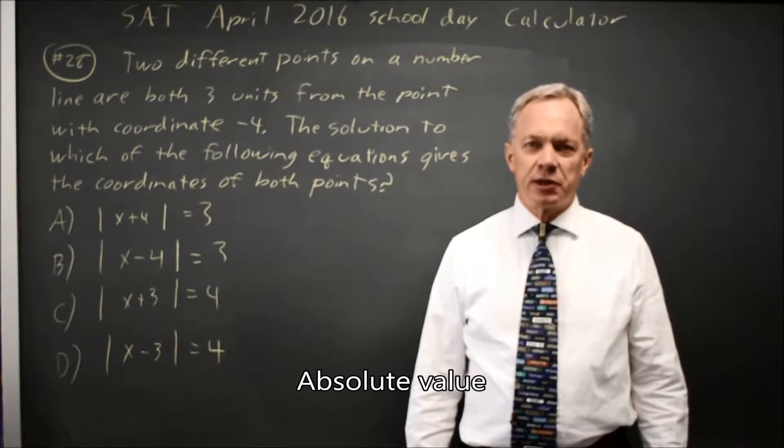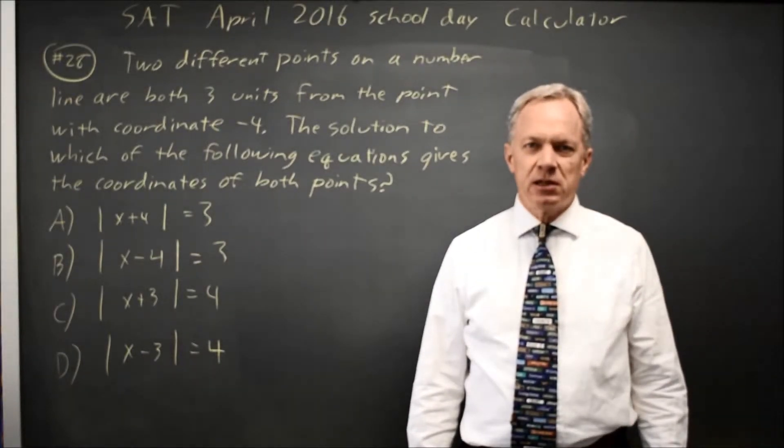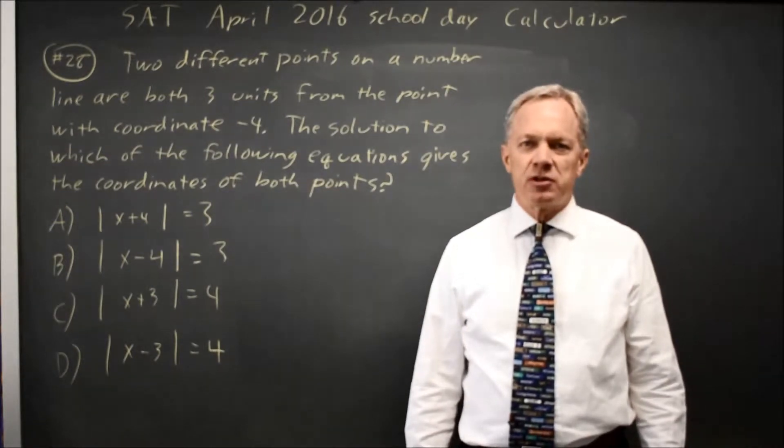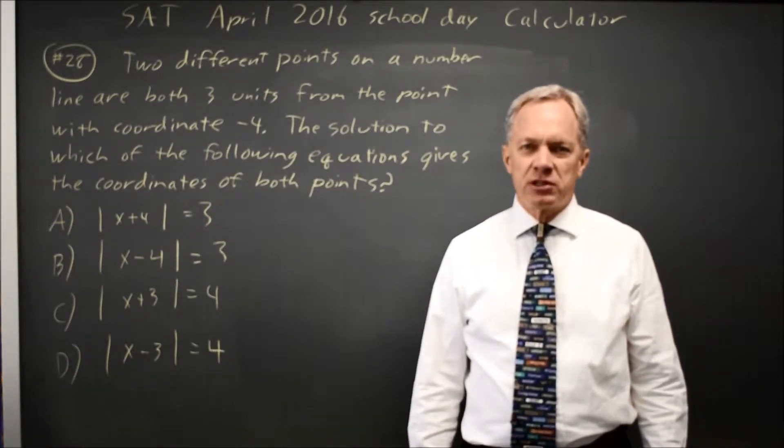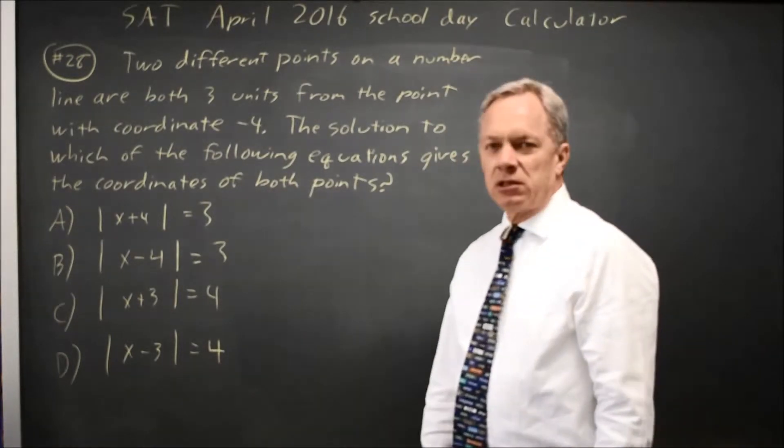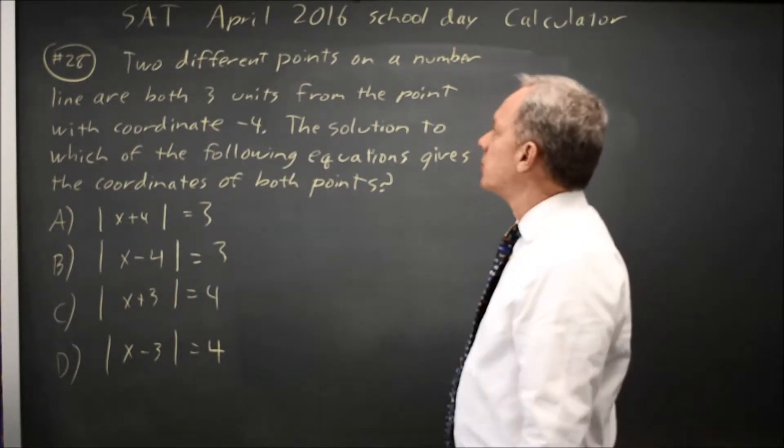This is calculator question number 28 from practice test 6, which is also the April 2016 SAT. College Board gives you a word problem describing points on a number line, and they ask you which absolute value equation describes those points.